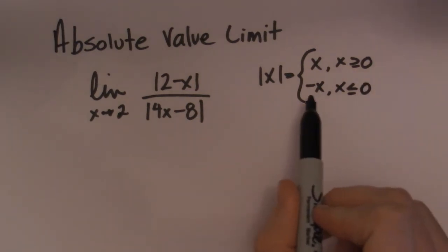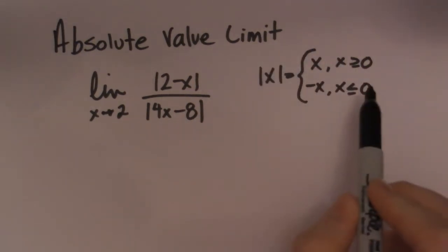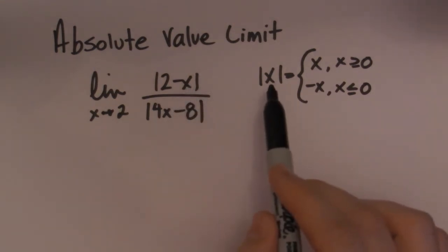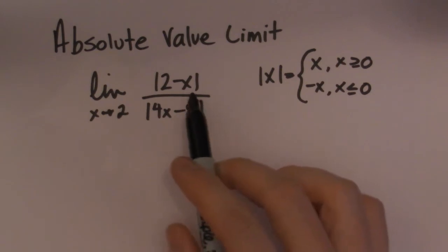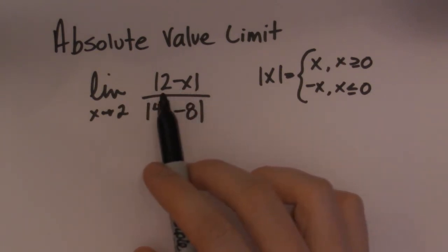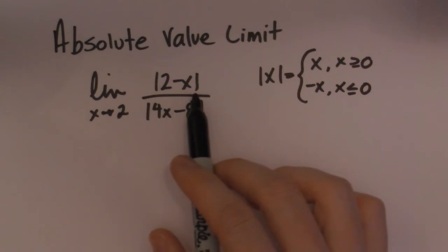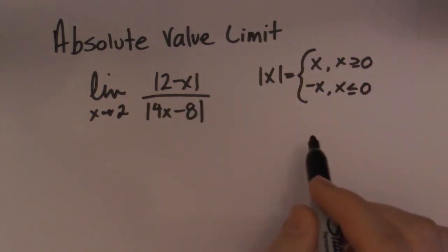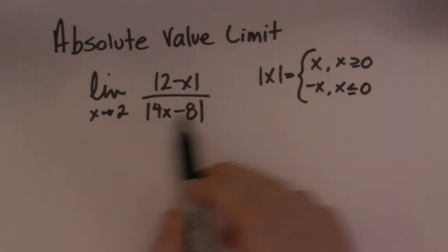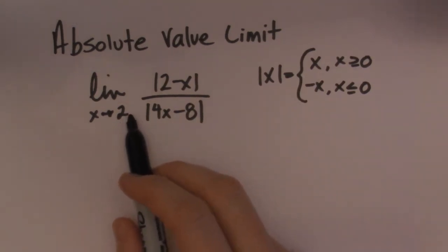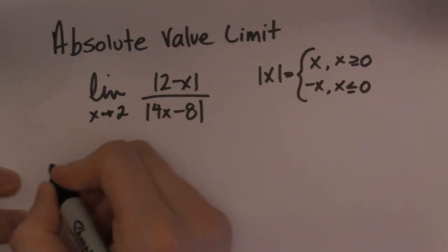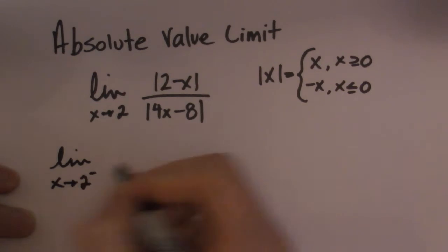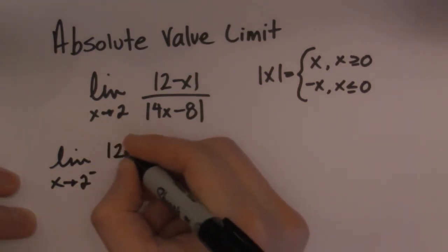So they're all basically some form of this, except the linear function inside the absolute value might be a little more complicated. So when I'm stuck or can't decide, what I want to do is look at what's happening. Before we do that though, we have to look at the fact that this is the limit as x goes to 2. So really, to solve this limit, we have to look at 2 from the left side and 2 from the right side.